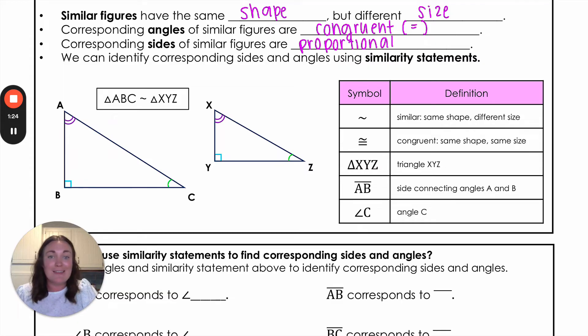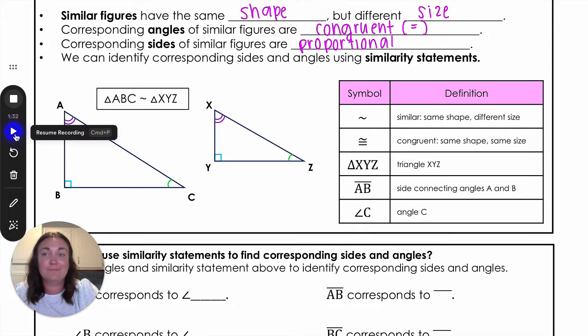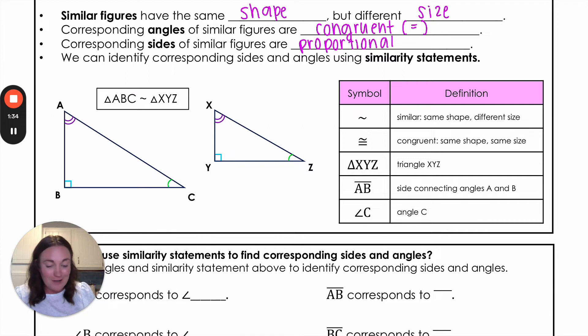If we talk about a specific side, this would be the side between A and B. So this side right here we put that little line above it. And when we want to talk about a specific angle we put this little angle symbol. This would be angle C which would be this right over here.